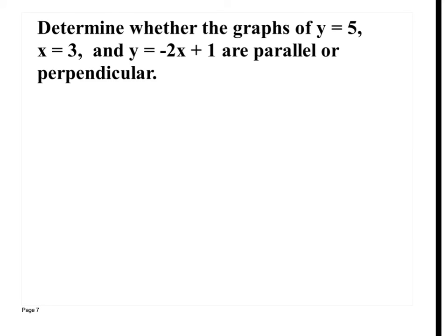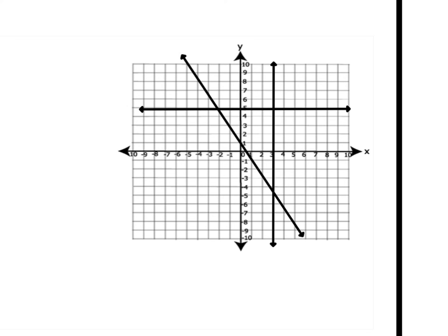You'll see a problem where it says determine whether the graphs of y equals 5, x equals 3, and y equals negative 2x plus 1 are parallel or perpendicular. They give you two or three graphs and ask if they're parallel or perpendicular. I'll go ahead and graph these. y equals 5, x equals 3, and y equals negative 2x plus 1. Are any of these lines parallel or perpendicular? Yes — perpendicular. x equals 3 and y equals 5 are the ones that are perpendicular, crossing at a 90-degree angle. Are any lines parallel? No.